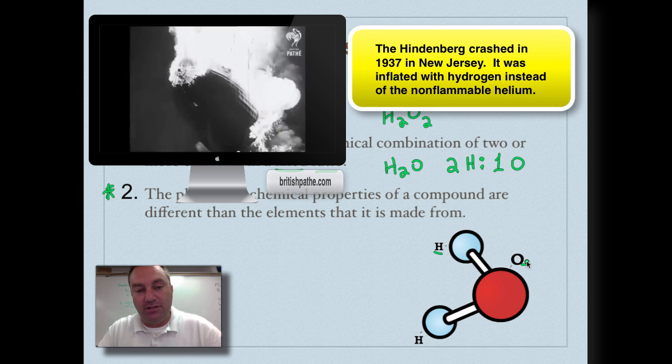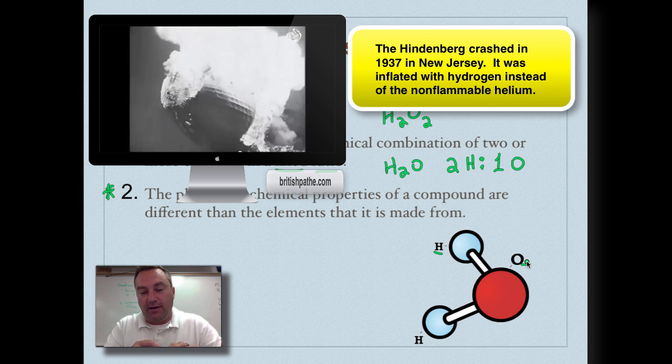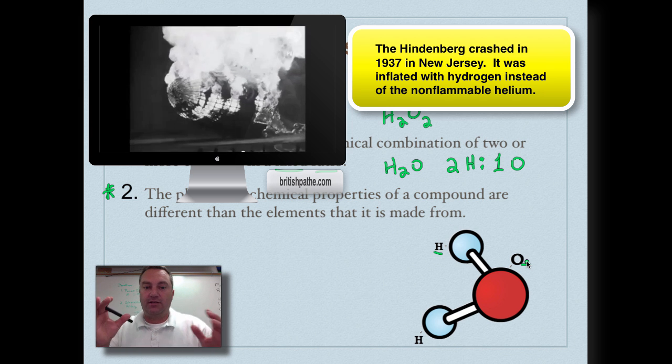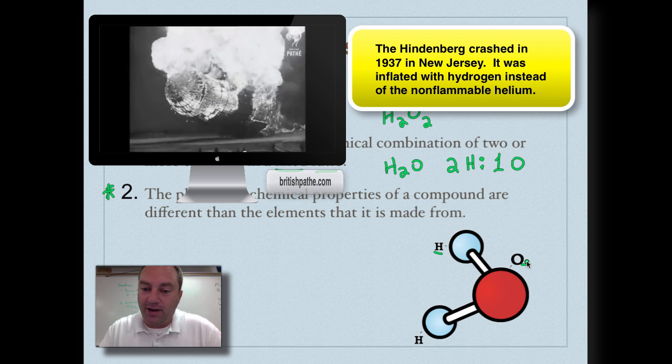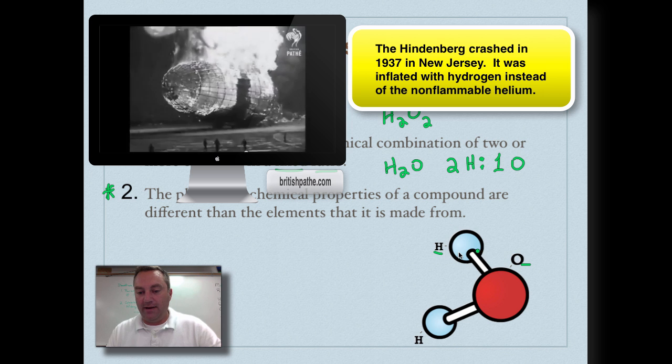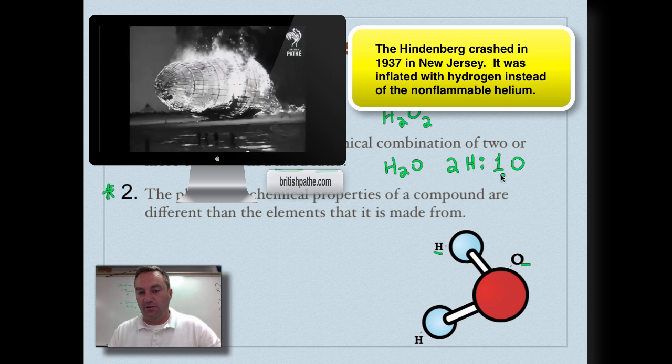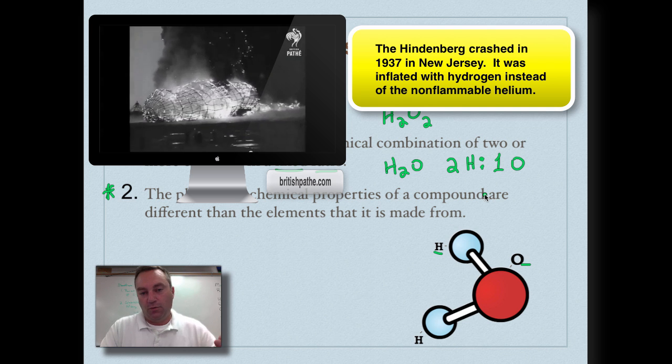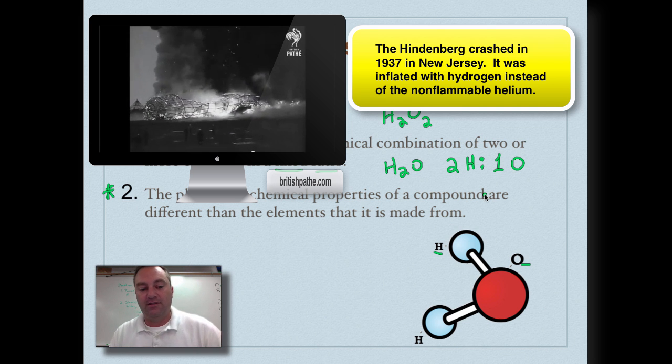You had hydrogen inside that blimp, a spark ignited, and oxygen in the atmosphere combined with the hydrogen and it exploded. Now luckily for us, if we chemically combine hydrogen with oxygen in a ratio of two to one, it doesn't explode and it creates water which is one of the most basic things that life needs.